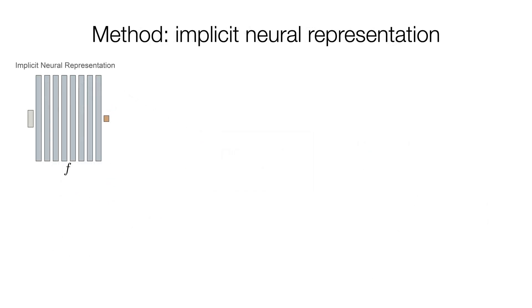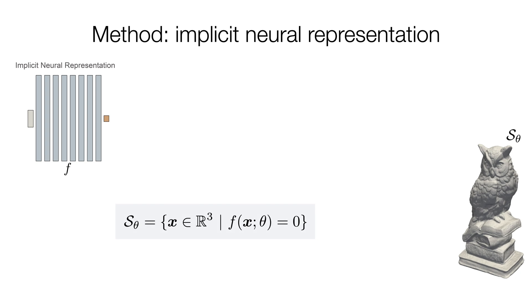Our geometry is represented as the zero-level set of a neural network F, which models for each 3D point its signed distance function to the shape. Given a learnable camera position and some fixed image pixel, we would like to produce differentiable RGB values.